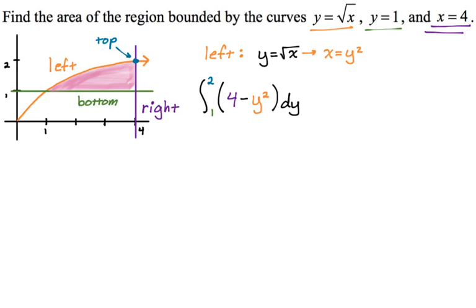So now we just find an antiderivative and evaluate it and just use the fundamental theorem. So the integral of four is going to be 4y minus the integral of y squared is one third y cubed. And then we're going to go from one to two.